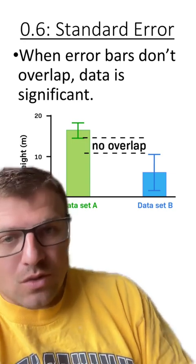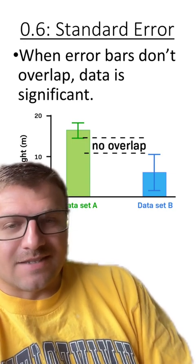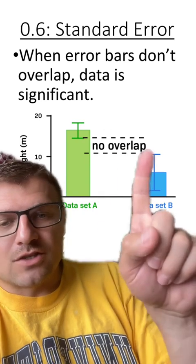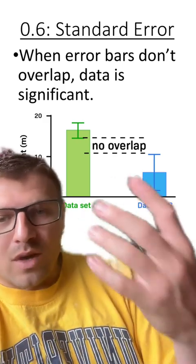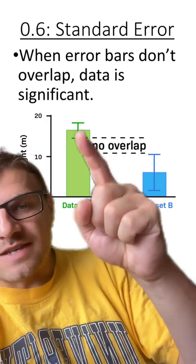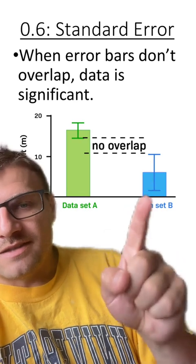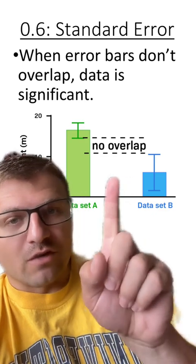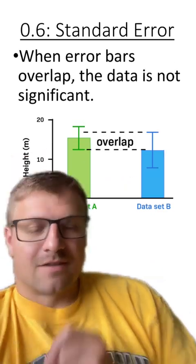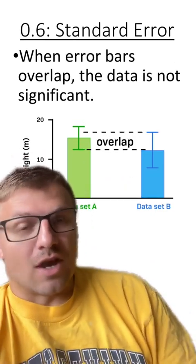When error bars don't overlap, that means the data is significant. So again, you can see there is no overlapping between data set A and data set B. So no matter when we do this average, you can see that this average is always going to be higher than this average. But those are the two main concepts students need to understand: when there's no overlap, the data is significant, and when there's overlap, the data is not significant.